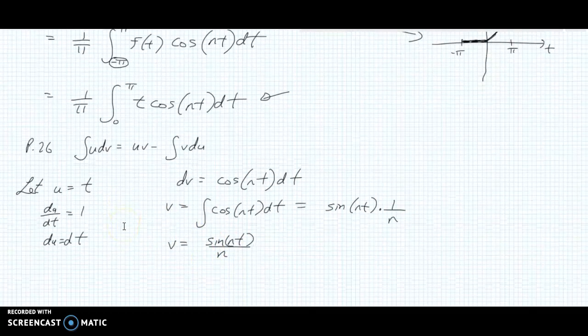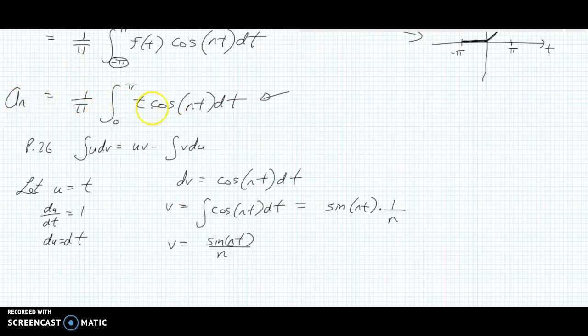And now we're going to rewrite this. a_n equals, we still have our 1 over π, a big curly bracket now, and now we're going to put in u and v. We've let u equal t, so we can put in t, and v equals this here. So we have sin(nt) over n, and we can put that in its own bracket, and we'll still keep the limits. And then we're going to be subtracting the integral of v du. The limits are π and 0, v is sin(nt) over n, and du, well, instead of du, we can put in dt.